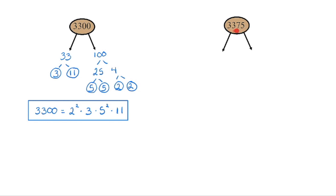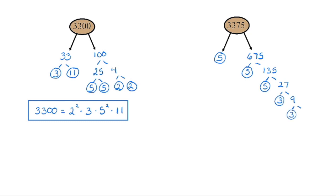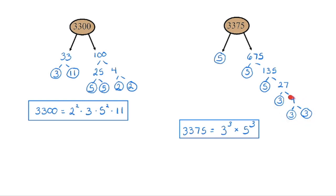Let's try 3,375. Because it ends in a 5, we know it will be divisible by 5. So 3,375 divided by 5 gives 675. That number also ends in 5, so 5 divides evenly again: 675 divided by 5 gives 135. And 135 is also divisible by 5, leaving us with 27. 27 breaks into 3 times 9, and 9 breaks into 3 times 3. You're finished when the final number breaks into two primes. So the prime factorization of 3,375 is 3 cubed — which is 27 — times 5 cubed — which is 125 — and those multiply to give us 3,375.